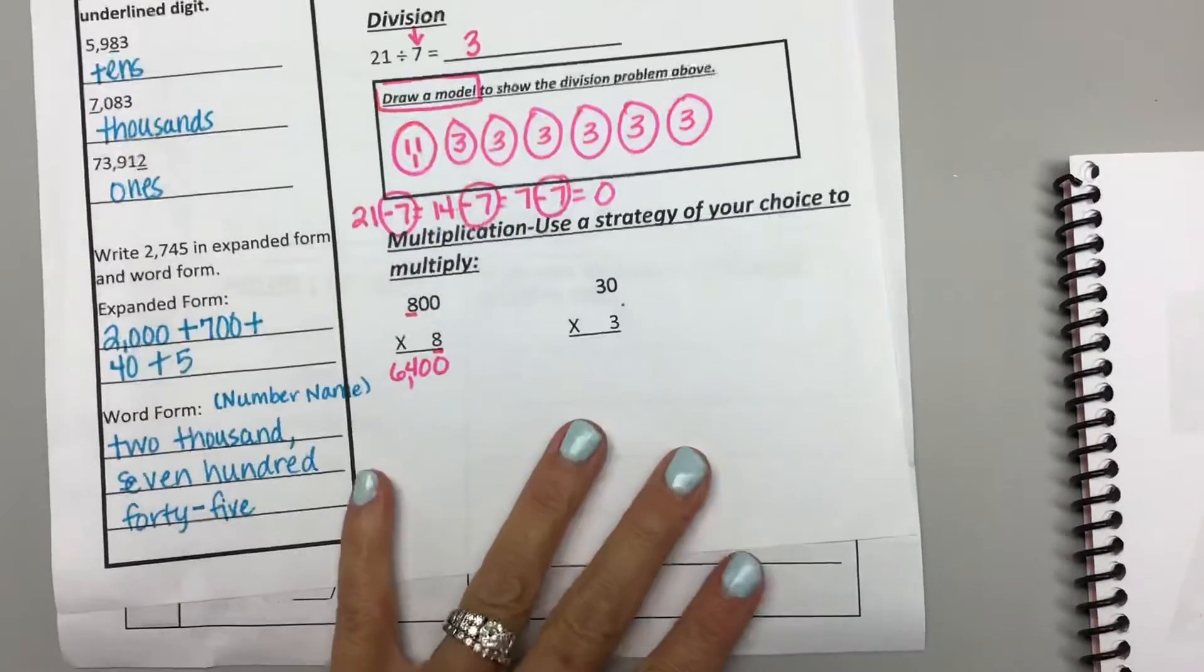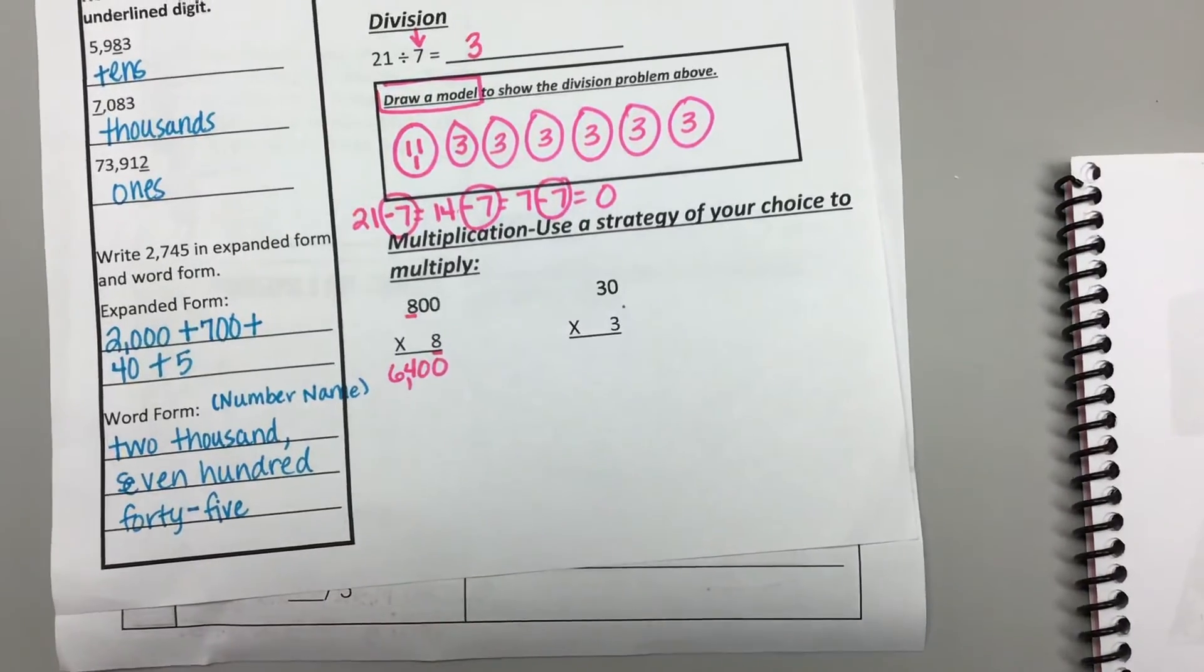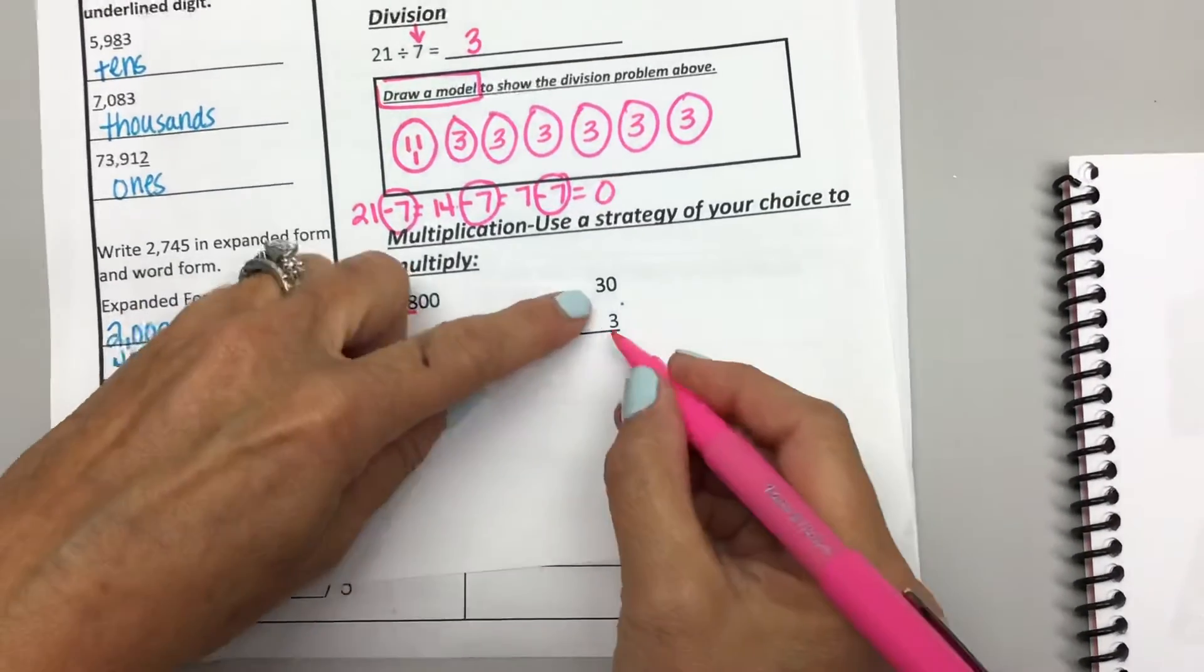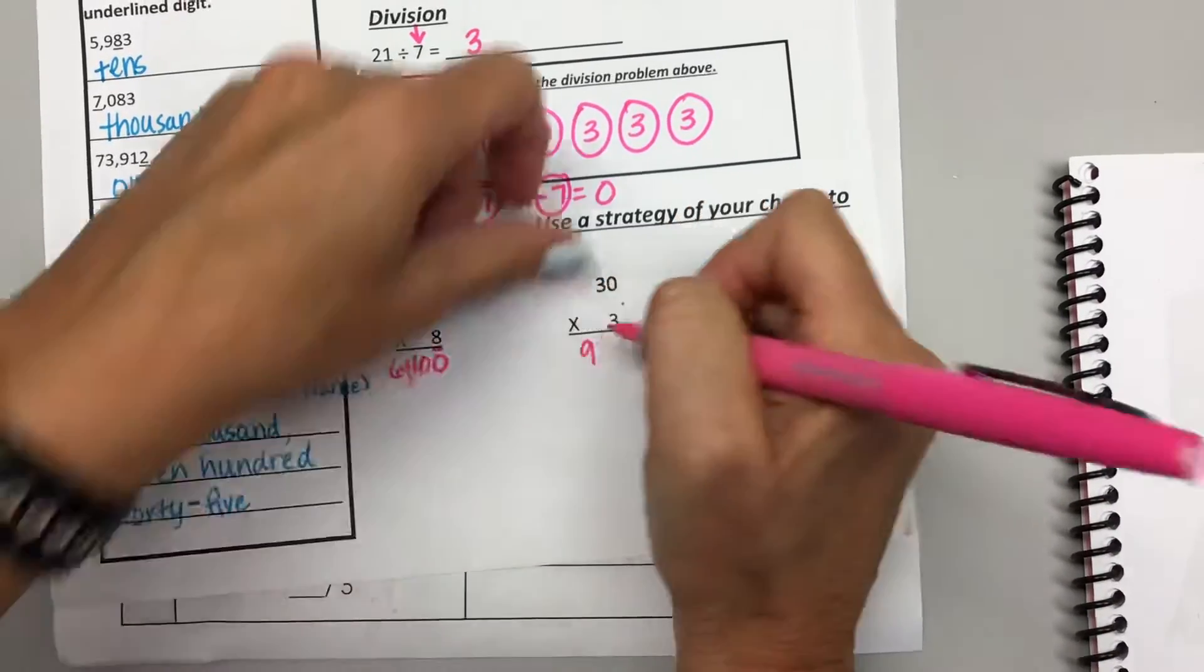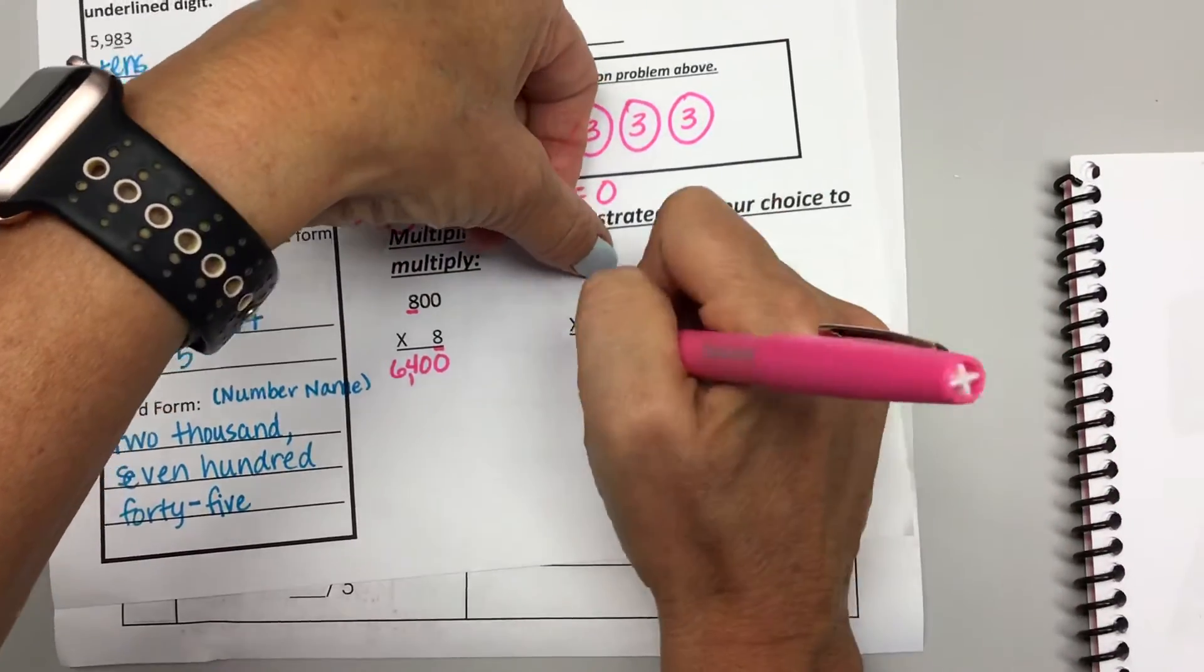And then I have 30 times 3. Let's use that same strategy. What's 3 times 3? 9. How many 0s will I add? 1. Okay.